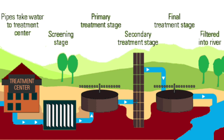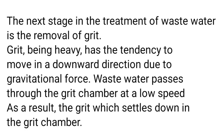Before the primary treatment begins, there is a preliminary screening stage in which iron bars or mesh nets are used to separate solid materials from the water. After separation, the water is passed to another chamber for grit removal. Grit can be inorganic and organic — since it is heavy, it tends to move downward due to gravitational force.